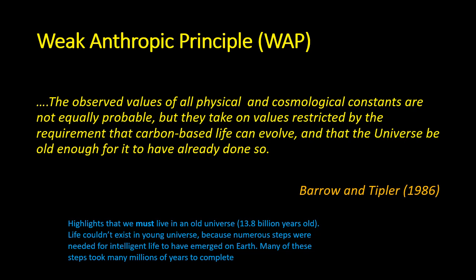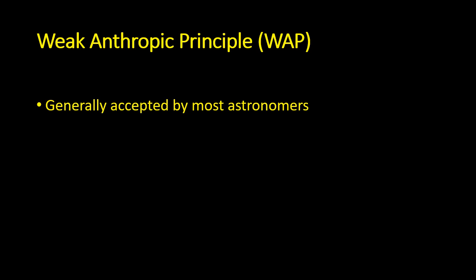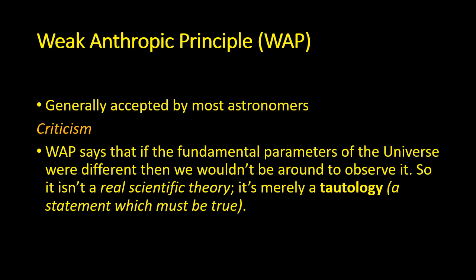One interesting fact about this definition is it highlights the fact we observe the universe to be 13.8 billion years old. If the universe were much younger, given all the complex steps which must have happened for Earth-like planets to exist around a sunlike star, and an additional 4.6 billion years after the Earth is formed for intelligent life forms to have emerged on this planet, there wouldn't have been enough time for this to have happened in a much younger universe. Generally speaking, the weak anthropic principle is accepted by most astronomers. In fact, one criticism of it is it's a tautology, it's not really a scientific theory, a statement that must be true.